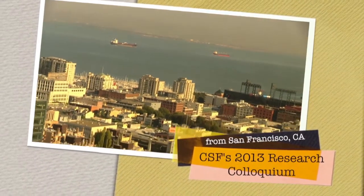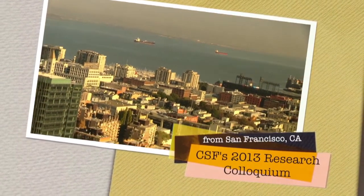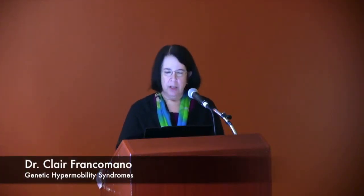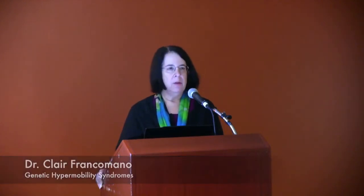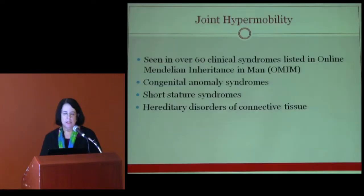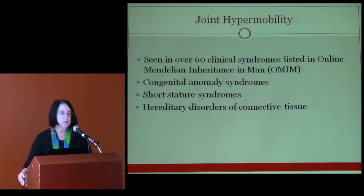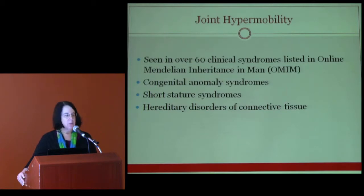If you type joint hypermobility into the search engine called Online Mendelian Inheritance in Man, which is a compendium of human genes and genetic disorders, there are over 60 different clinical syndromes which appear. Some of these are multiple congenital anomaly syndromes, some are short stature syndromes, and some are the hereditary disorders of connective tissue, which are the ones we will address today.